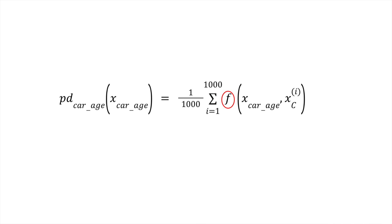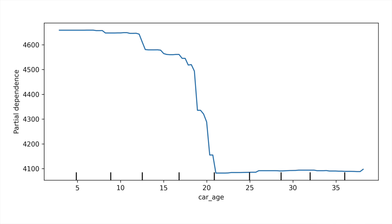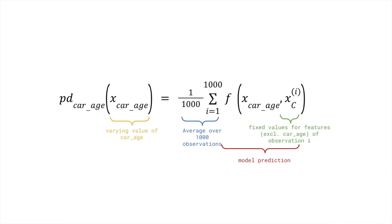F is the prediction function for our machine learning model. C is the set of features that contain all the features except car age. So, XCI is the values for the feature in set C for instance i. So, for a given car age value, we find the PD value by summing over all 1000 instances in our datasets. For each instance i, we get the prediction using the given car age value and the remaining feature values for that instance. We then take the average of the 1000 predictions. This is the process we went through to find the average prediction line for car age summarized into an equation. We can see that it is really just a function of car age. So, hopefully this equation is clear for this specific case.